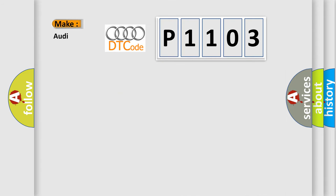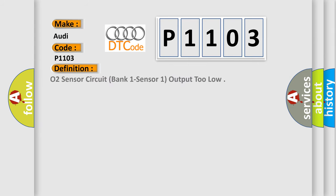So, what does the diagnostic trouble code P1103 interpret specifically for Audi car manufacturers? The basic definition is: O2 sensor circuit, bank 1 sensor 1, output too low.